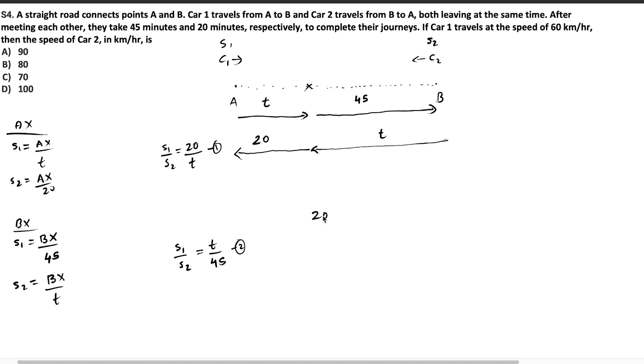And we will get it as 20 by T is equal to T by 45. So that means T square is equal to 45 into 20, 900. And T is equal to root of 900 which will be 30 minutes. So now we have got the value of T as 30 minutes. So we write it down here. I hope you understood till now and the rest of the question is very simple.